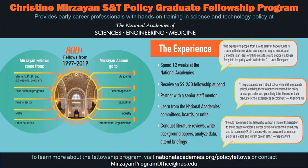It's a 12-week program. The stipend will go up by another $250 to $9,500. It's basically partnering with a mentor at the National Academies, learning about the National Academies. But a huge component of the program is connecting with the science policy community in Washington and networking with each other.